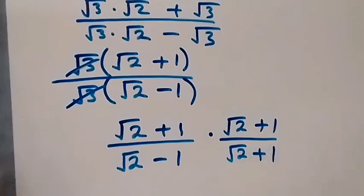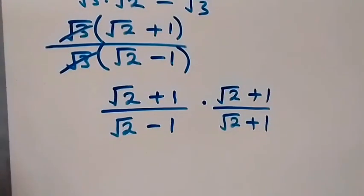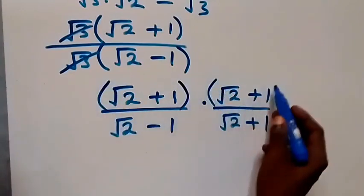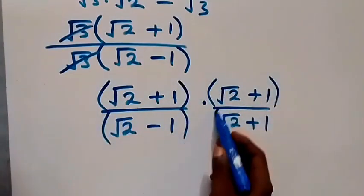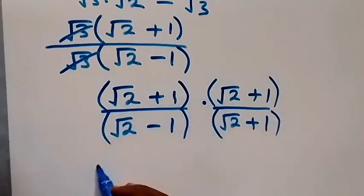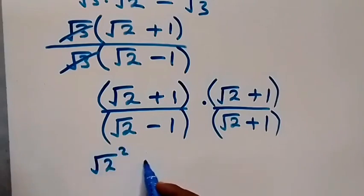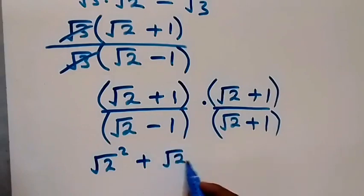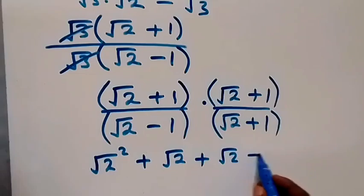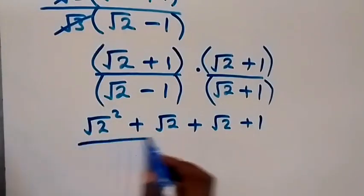We multiply this directly — we open this bracket and also this bracket. When we open the numerator: root two times root two gives root two squared, then plus root two times one gives root two, then plus one times root two, then plus one times one gives one.